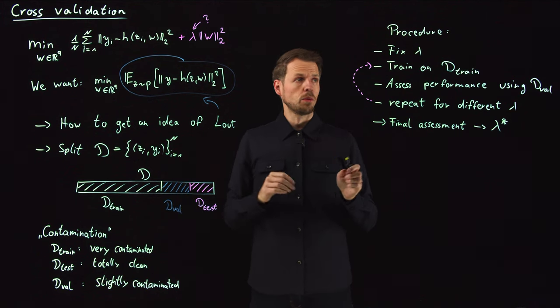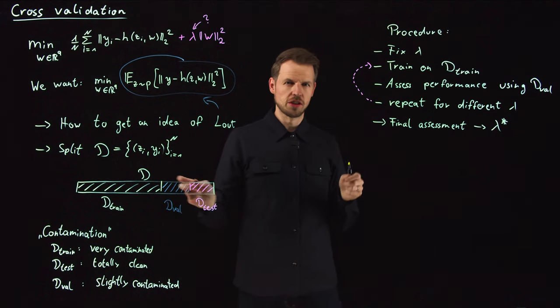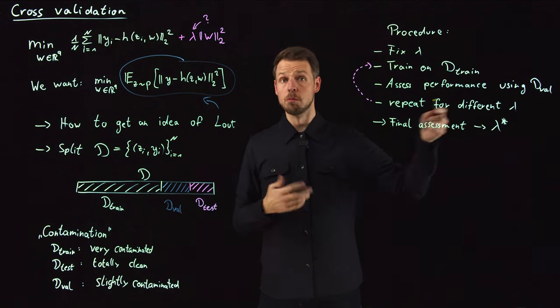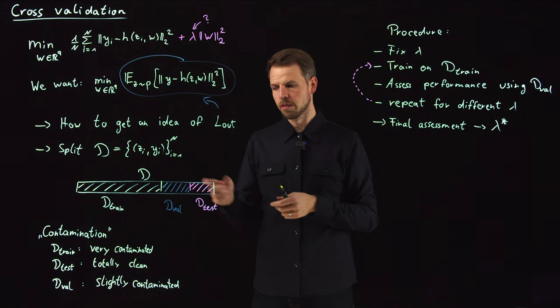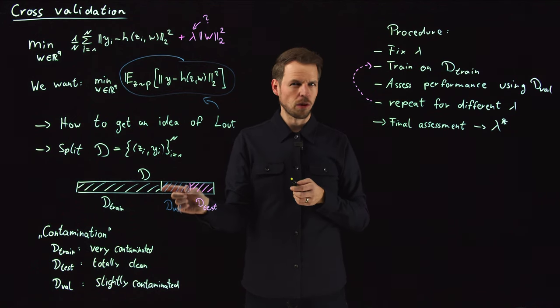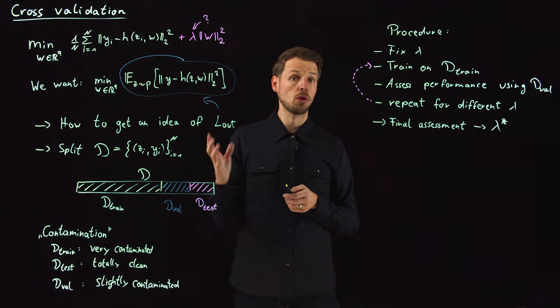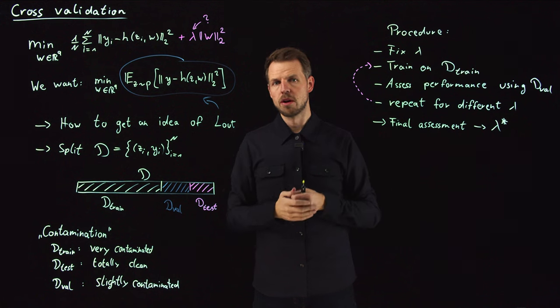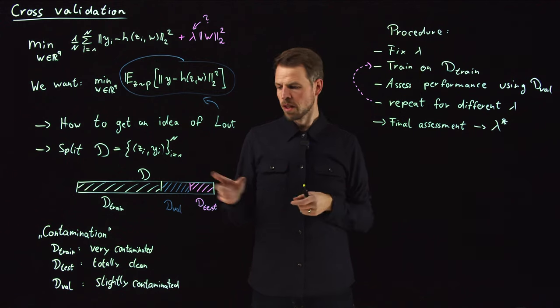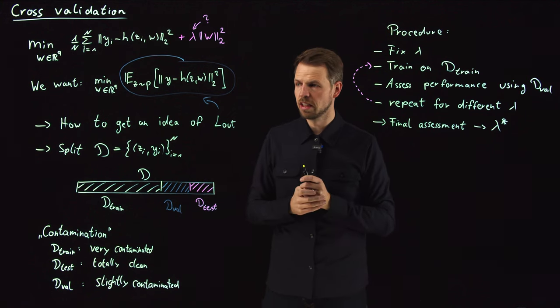So this is the idea of validation and model selection based on this validation dataset. And so if you think about it, we have a learning problem. And then we have on the validation set just a second learning problem. Select out of a finite number of model options the best model given training data. So for your hyperparameter selection, this is now our training dataset. And so there's a difference obviously because this is a small set and it's only used to make a choice on a few parameters. And the theory will tell us if this is a low dimensional parameter, a smaller set will be sufficient to make a good choice.